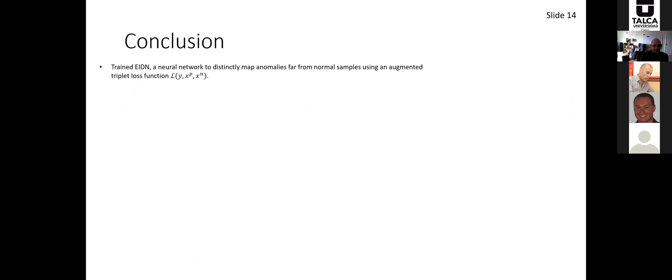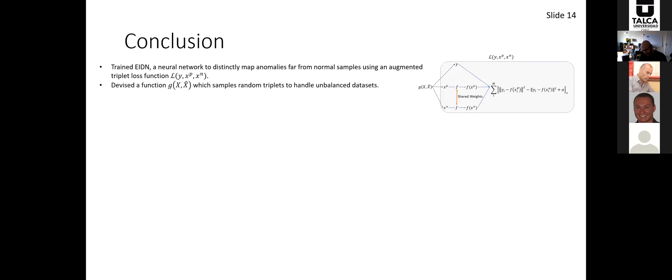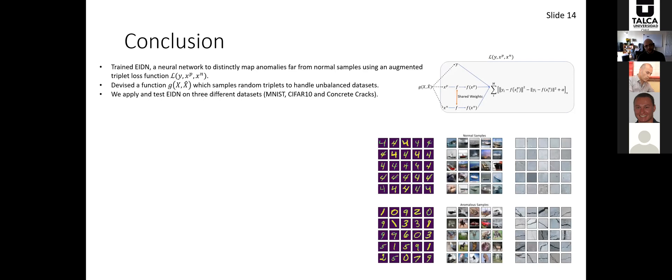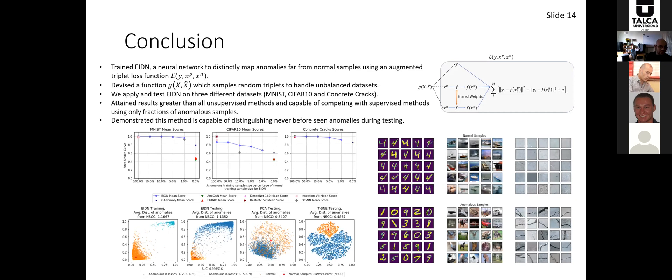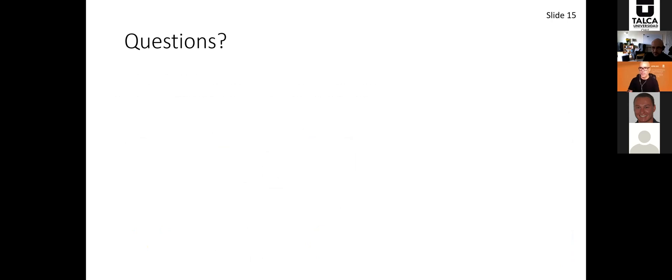So to conclude: we trained ADEN, a neural network, to distinctly map anomalies far from normal samples using an augmented triplet loss function. We devised a random triplet sampler function g(X, X-hat) to handle unbalanced data. We applied ADEN to three datasets — MNIST, CIFAR-10, and concrete cracks — and attained better scores against all unsupervised learning methods and scores competitive with supervised learning methods while using only a fraction of anomalous samples. We also demonstrated that the method is capable of distinguishing never-before-seen anomalies during testing. I'm now open to questions.